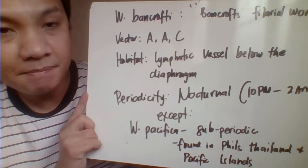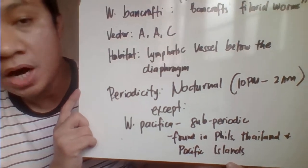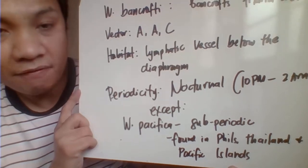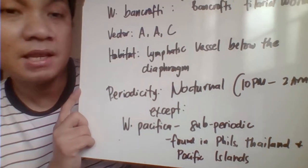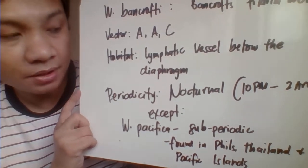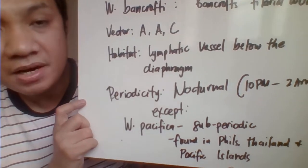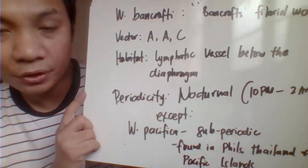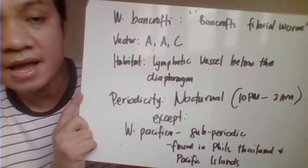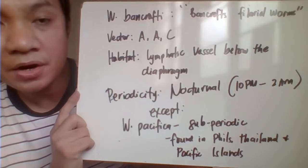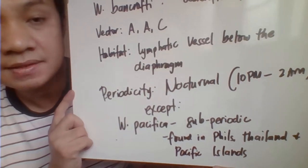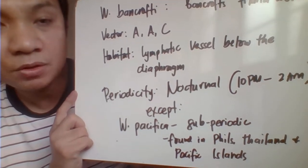The habitat: adult worms inhabit the lymphatic vessels below your diaphragm, and the microfilaria can be found in your peripheral blood circulation. The periodicity for that is nocturnal — the microfilaria is present in highest concentration during nighttime, specifically 10 p.m. to 2 a.m.